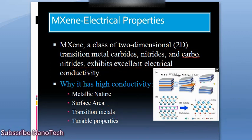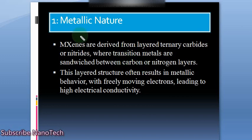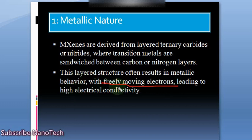The metallic nature of MXene makes it an excellent electrical conductor because of the presence of free electrons. This layered structure results in metallic behavior with freely moving electrons, leading to high electrical conductivity. So the first major reason for the higher electrical conductivity of MXene is its metallic nature.